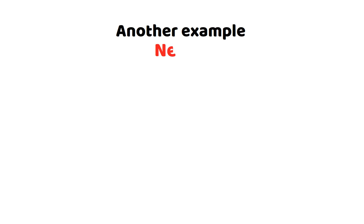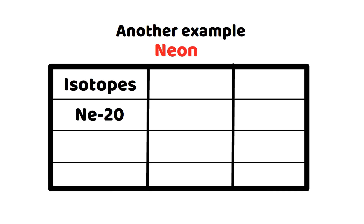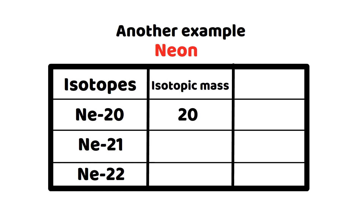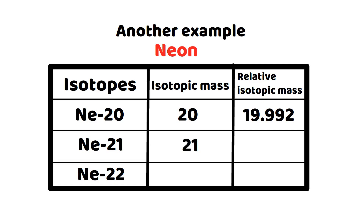The element neon also has three isotopes — neon-20, neon-21, and neon-22. Neon-20 has 10 protons and 10 neutrons, so its isotopic mass is 20 and relative isotopic mass is 19.992. Neon-21 has 10 protons and 11 neutrons, isotopic mass 21, relative isotopic mass 20.994. Neon-22 has 10 protons and 12 neutrons, isotopic mass 22, and relative isotopic mass 21.991.